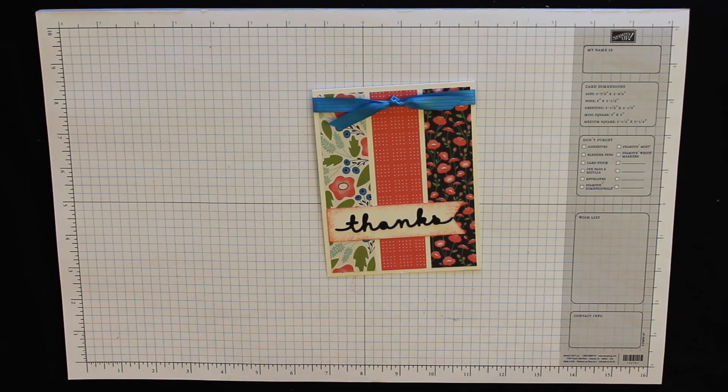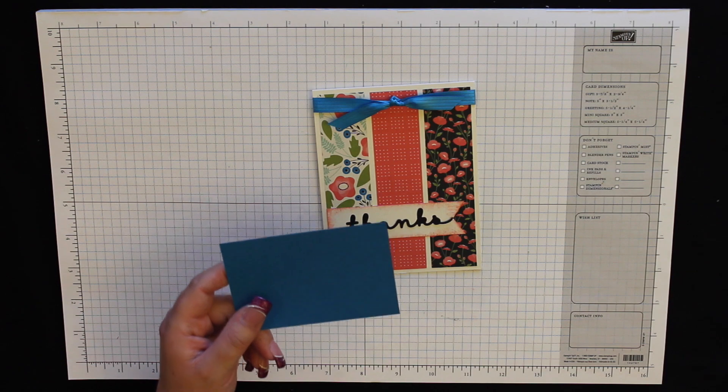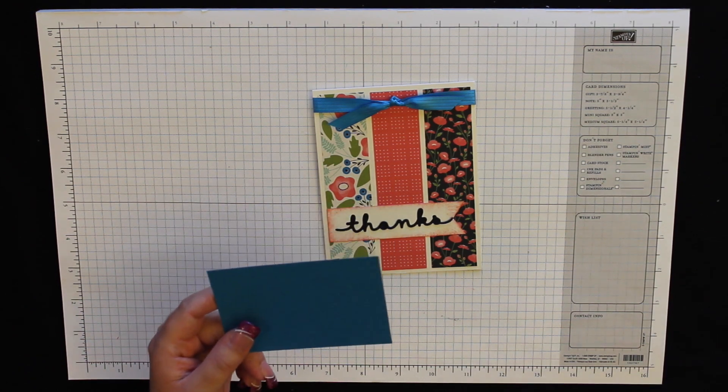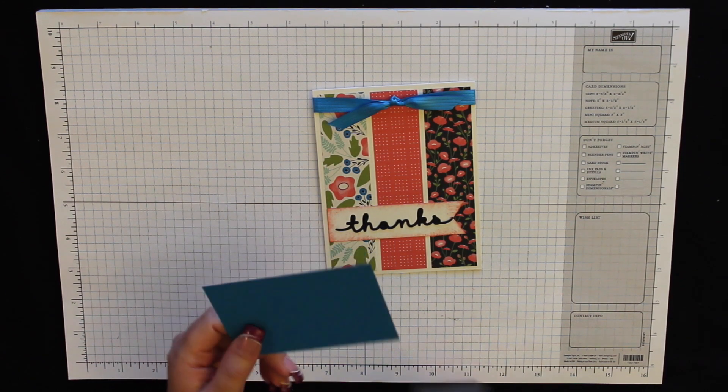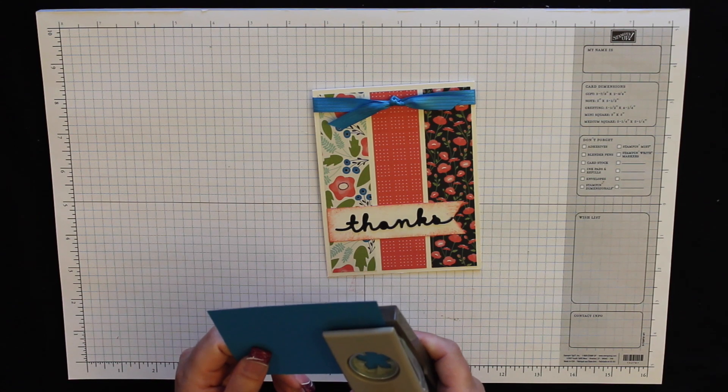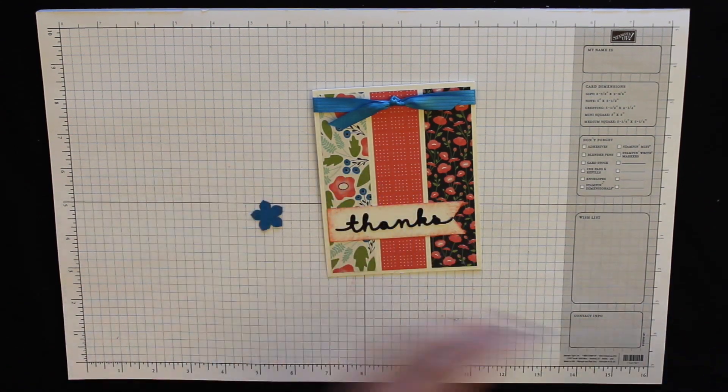The final thing I want to do is I have another scrap of Pacific Point cardstock, and I also have the petit petals punch. I'm going to punch out one of those flowers.